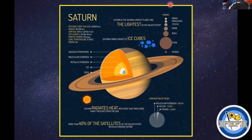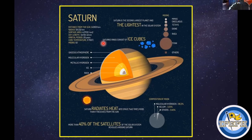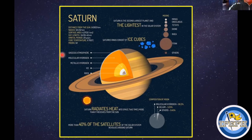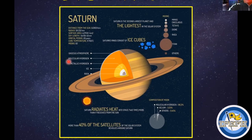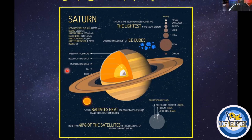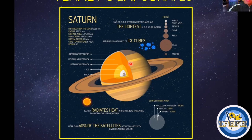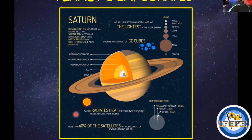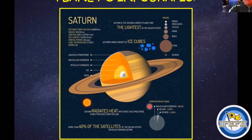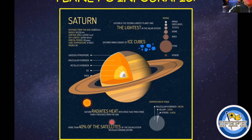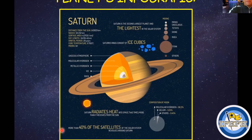We have information also about the moons and the composition of the moons. For example, Saturn's rings consist of ice cubes. We have information about the atmosphere as well. In this case, we have a gaseous atmosphere that is made of molecular hydrogen, metallic hydrogen, ice, and rock. We have information about the composition of the planet. Here we have another important fact: Saturn radiates heat into space two times more than it receives from the Sun. Also, more than 40% of the satellites of the solar system revolve around Saturn.